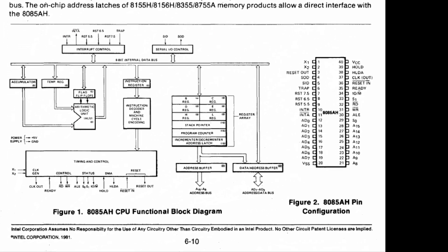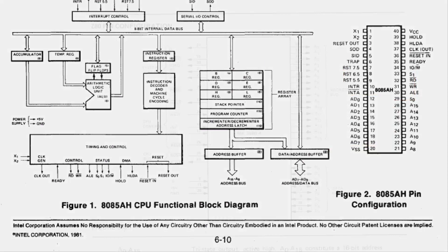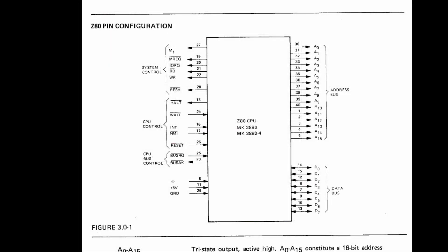The 8080 and the 8085 just duplicate the port address onto the high byte. So if you're talking to port 0x24, this would go onto the 16-bit address line as 0x2424. In some cases having the port address on both the low byte and the high byte is convenient on the 8080 and the 8085. But it's useful so infrequently that the designers of the Z80 decided to up the game a bit and put additional information onto the high byte rather than just duplicating the low byte port address.